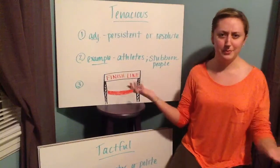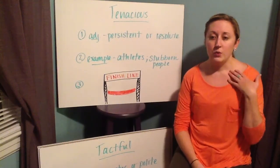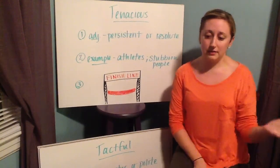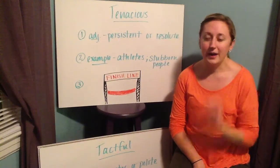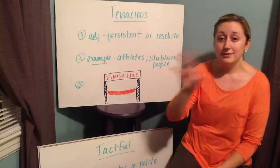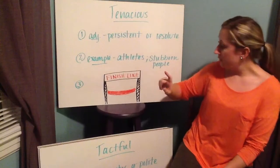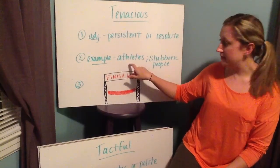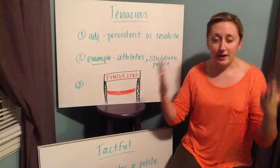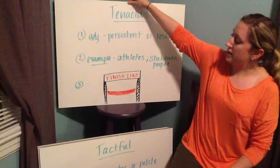I also put down stubborn people in general. If you have a friend where you know they're wrong, and you lay out all this information, and at the end of the day they still say "I think this way because that's how I think" — they're tenacious. No matter what is set before them, they're persistent and going to believe what they want to believe. The picture I drew to remind us of tenacious athletes is the finish line, because athletes are going to do whatever it takes and work really hard to get there.